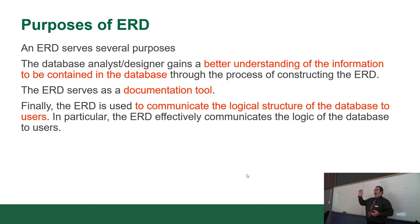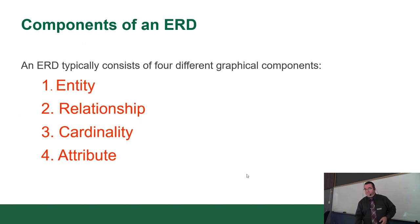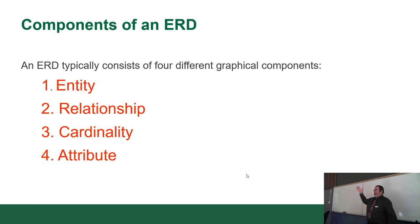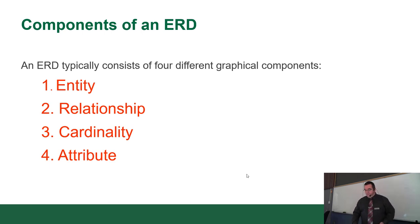At that point, the customers likely aren't involved anymore — it's just the developers. When you talk about an ERD, there are four components: entities, relationships, cardinality, and sometimes attributes. The entity is a thing; the relationship is how things are interconnected; cardinality has to do with the rules of how they're connected; and attributes describe the entity in more detail.